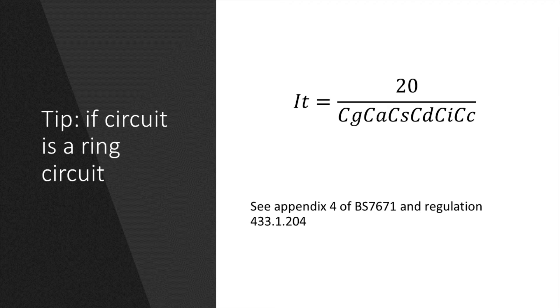Regulation 433.1.204 says that accessories to BS1363, in other words socket outlets, can be supplied by a ring circuit protected by 30 or 32-amp protective devices, the circuit having a minimum CSA of 2.5mm cable, except for mineral insulated cable. Such circuits are deemed to meet the requirements if the current carrying capacity IZ of the cable is not less than 20 amps. In other words, each leg of the ring circuit is not expected to exceed 20 amps.